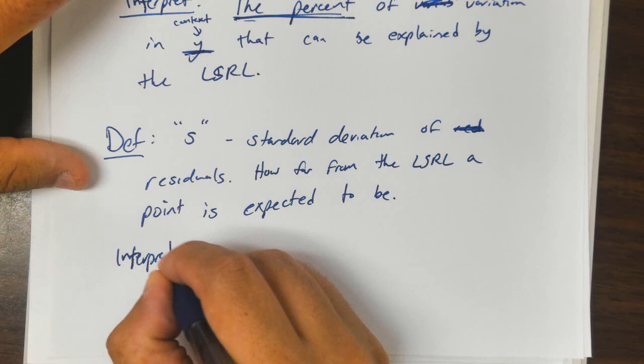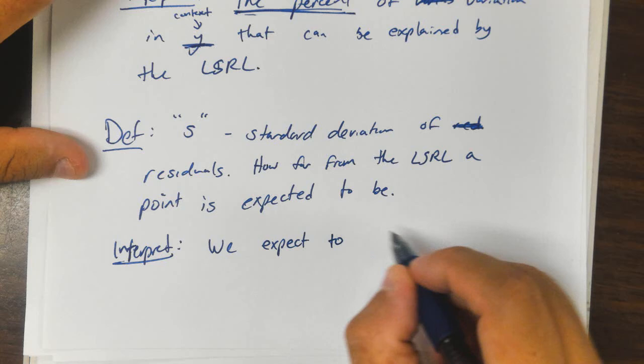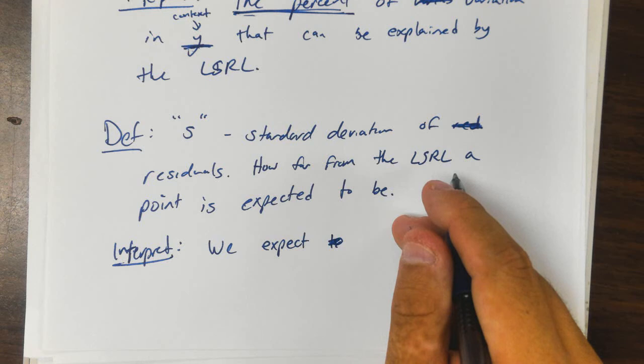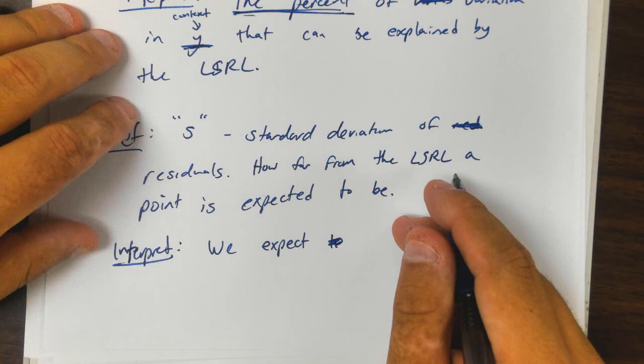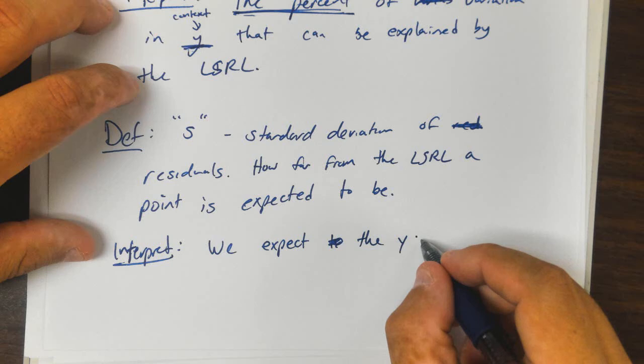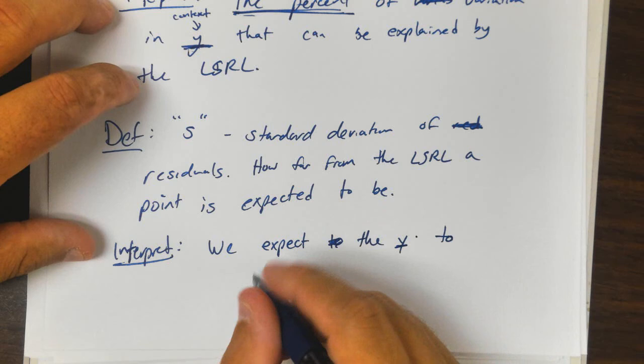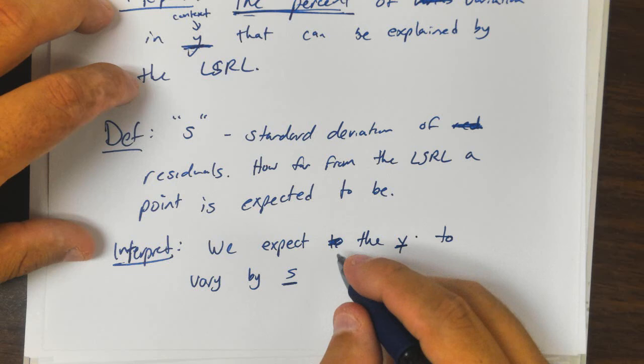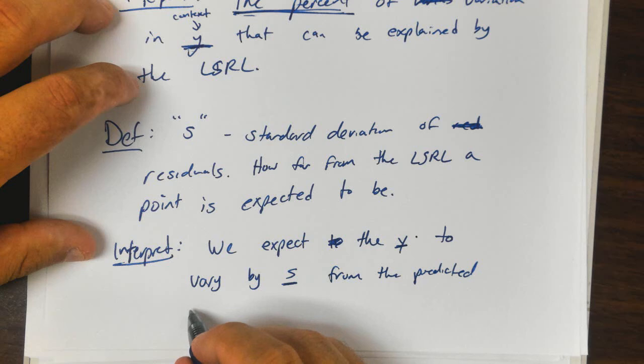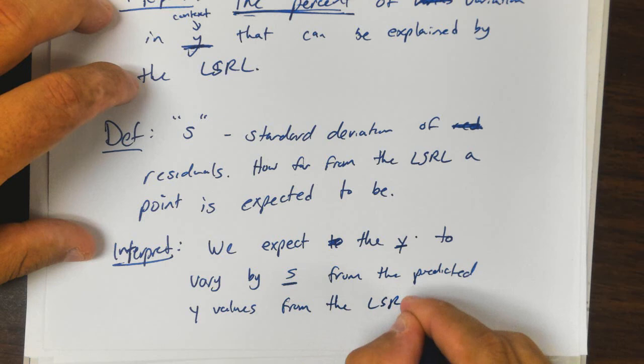And your interpretation—this is what I really care about. When I ask you to interpret S, you would say something like this: we expect the Y's (and of course you're going to put something in there) to vary by S (and again, you're going to put the value in there) from the predicted Y values from the least squares regression line.